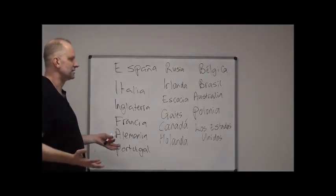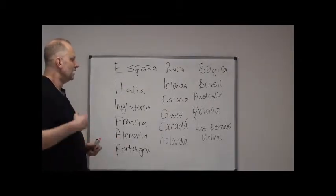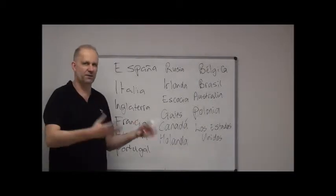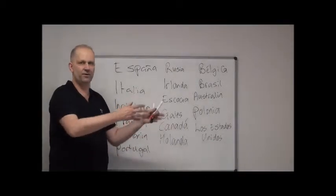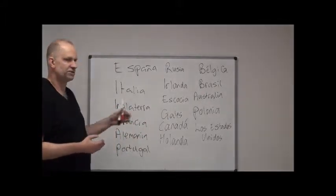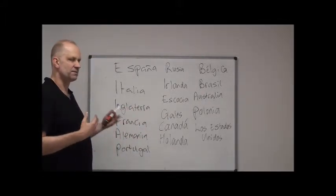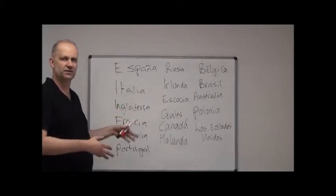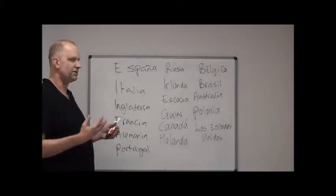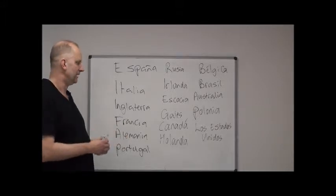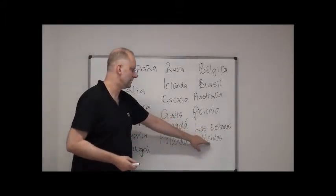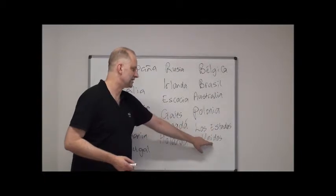The only one which is more than one word is the United States. In English we tend to just say 'America' — he comes from America, he's American — but in Spanish that's too vague, because someone who is 'American' could be Canadian, Mexican, Colombian, whatever. So they use the full country name: Los Estados Unidos — 'the States United' — they put the adjective after the noun.